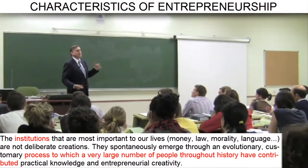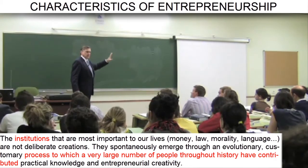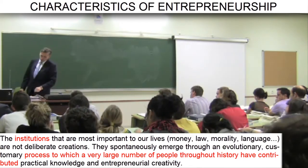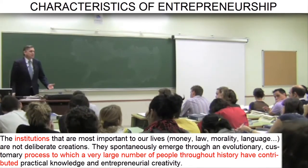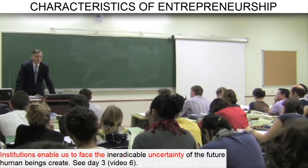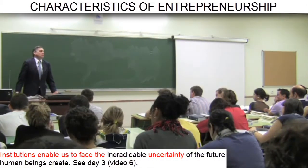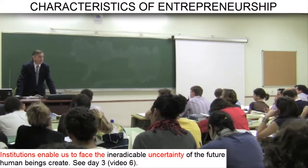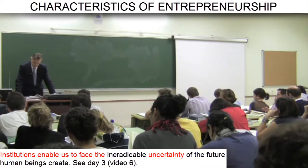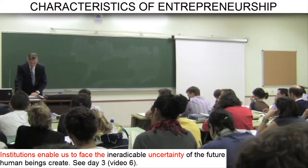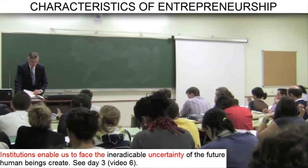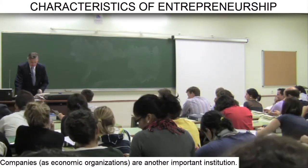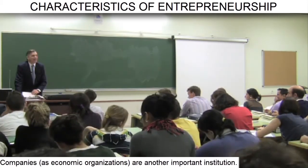Only a posteriori, in view of the institutions which have taken shape, can economic science account for even the tip of the iceberg — a fraction of the role played by these institutions, these patterned behaviors, which enable human beings to face, with greater chances of success, the ineradicable uncertainty that pervades our lives. We don't know what the future will be like, because it will depend on entrepreneurial knowledge, which is constantly, at all times, being created ex novo. I could mention another institution — the company, understood as an economic organization, which is an integral part of the entrepreneurial process.